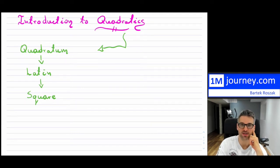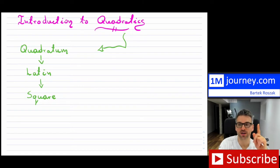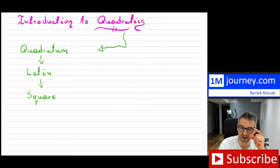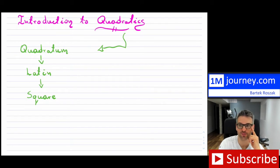What are these things? The word 'quadratics' comes from 'quadratum' — it's from Latin, and it means square.